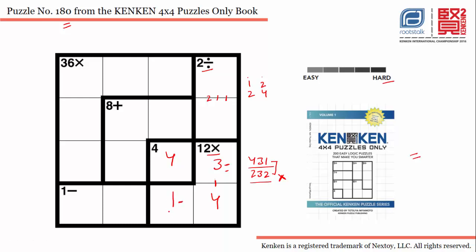If you observe, 3 is not possible in these two cells — this is the place for 3, and 1 we will be putting here. We have already used 1 and 4 in this row, so the possible combination for this cage is 2 and 3, which gives us 3 minus 2 equals 1.